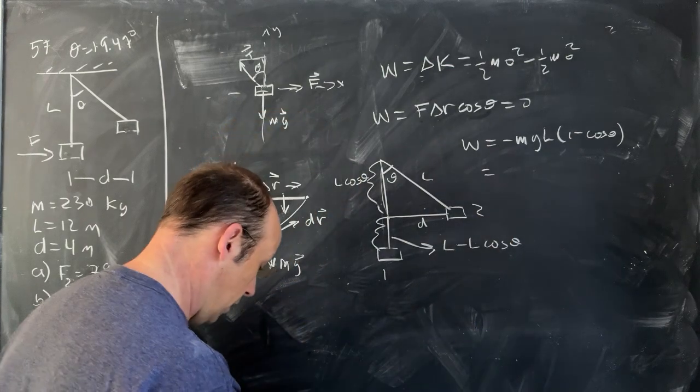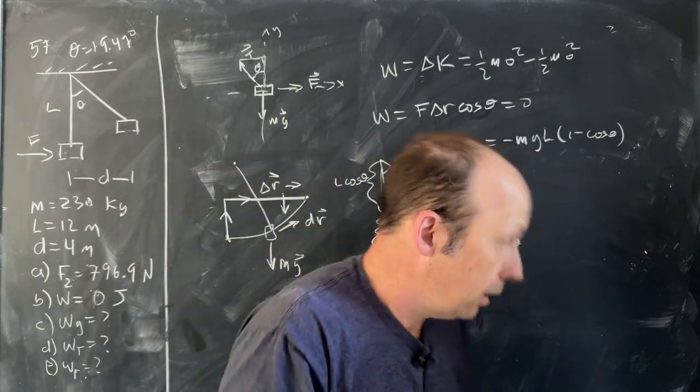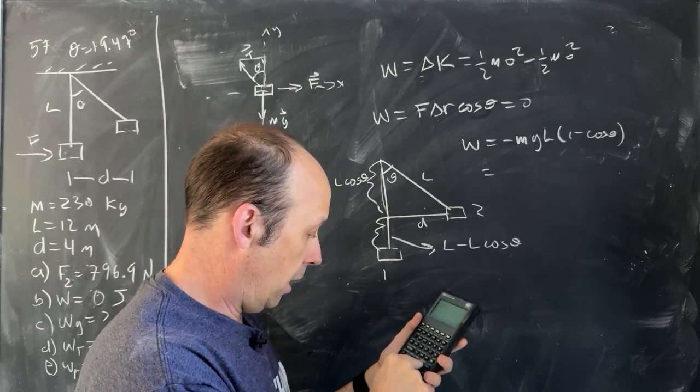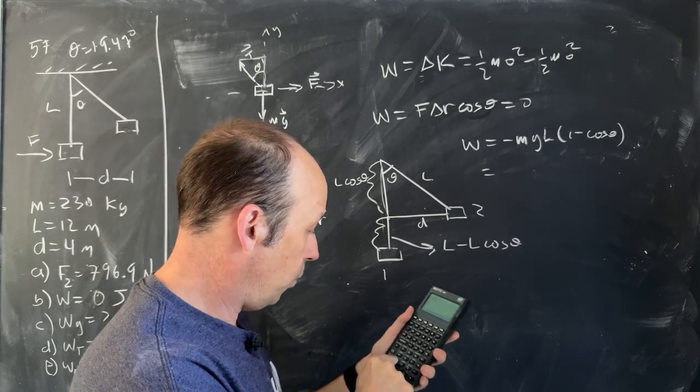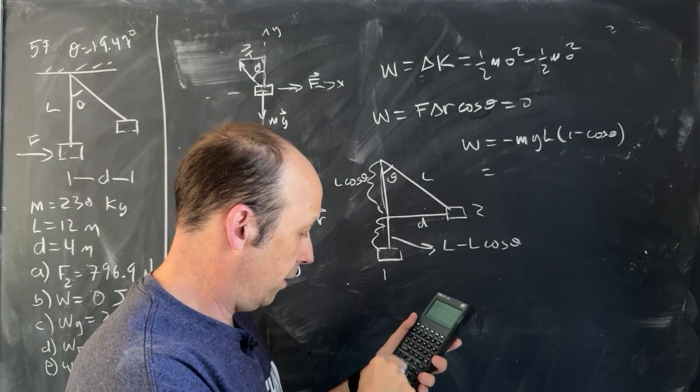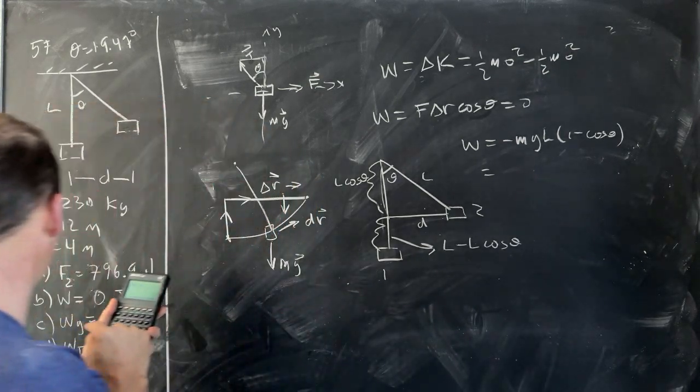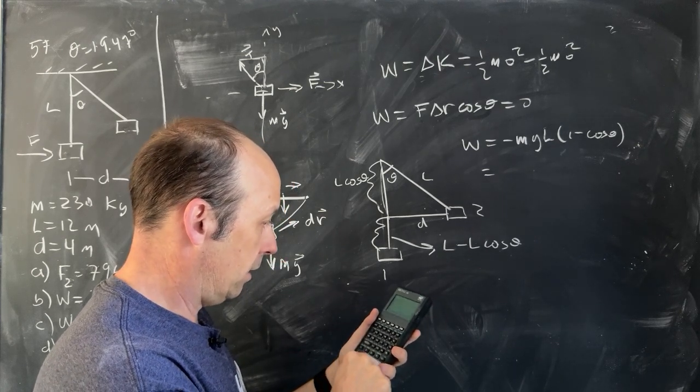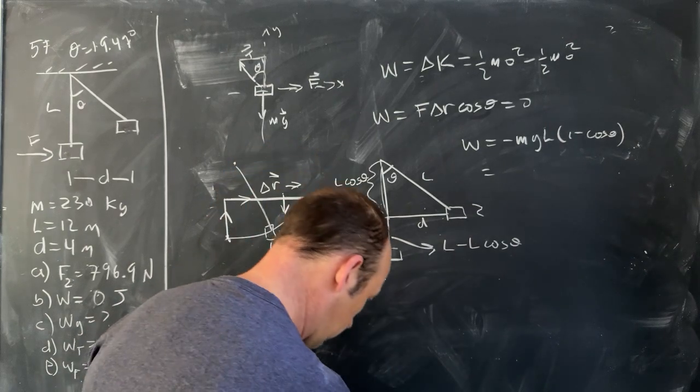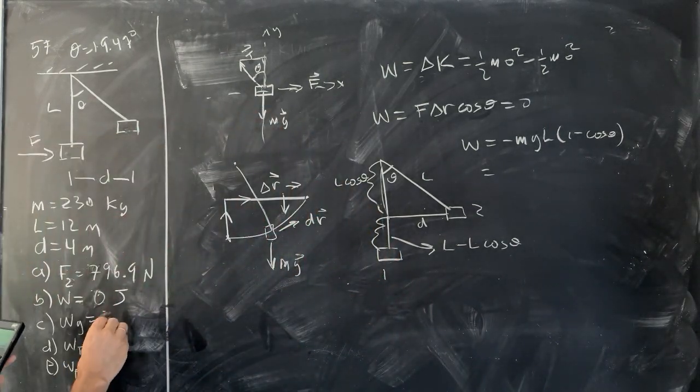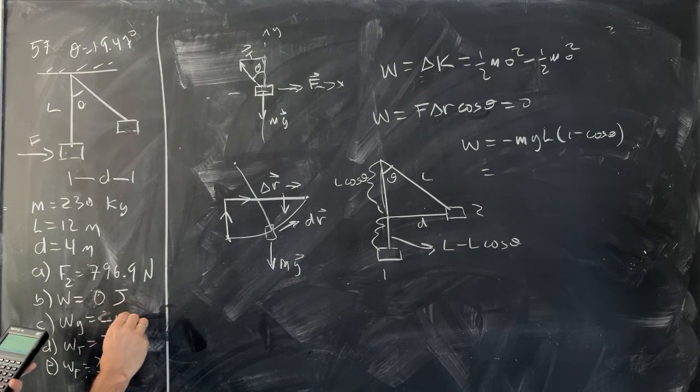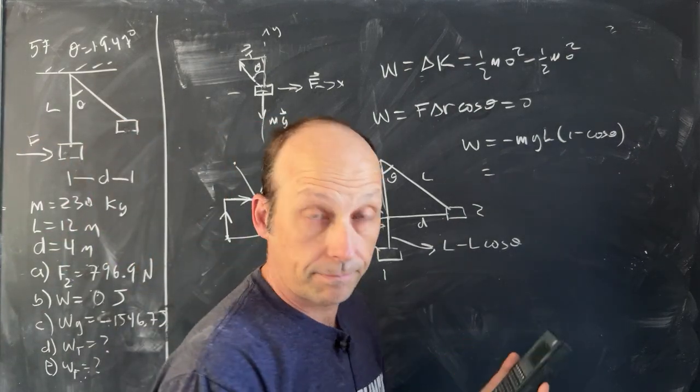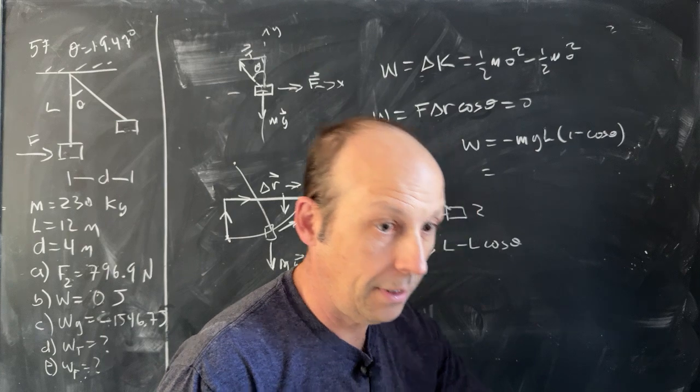So work done is going to be equal to, now you're moving this way, gravity is that way. So the angle between them is 180 degrees. The cosine of 180 is negative 1. So it's actually going to be W = -MgL(1 - cosine theta). So let's put in our values for that with the calculator. So I know theta, so it's going to be 230, enter, 9.8 times, L was 12 times, and then, that seems big, and then, 1, enter, and 19, good thing I wrote it down, 19.47 cosine minus times, and I get, oh, I'll put it over here, negative 1546.7 joules.